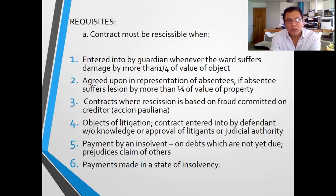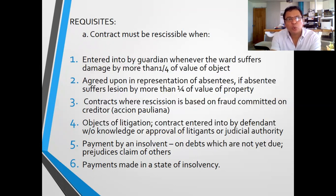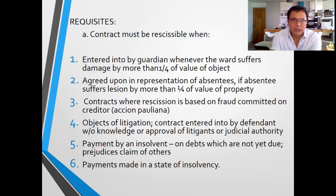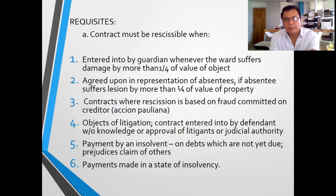For example, the value of the object is one million and the guardian only sold it for 500,000 pesos. So the ward suffers 500,000 in damage. Number two: those agreed upon in representation of absentees, where the absentee suffers lesion by more than one-fourth of the value of the property. Lesion is the damage, which is the gross inadequacy of the selling price.